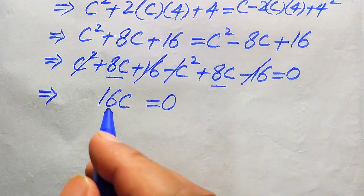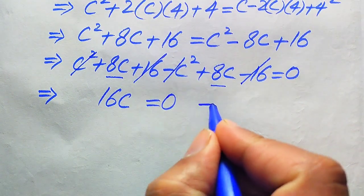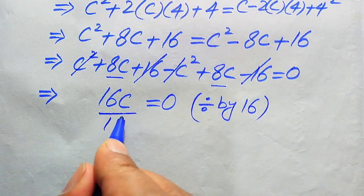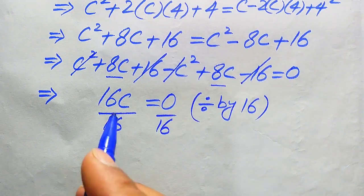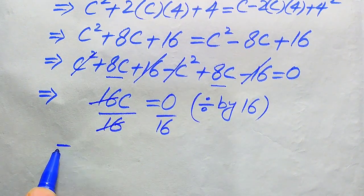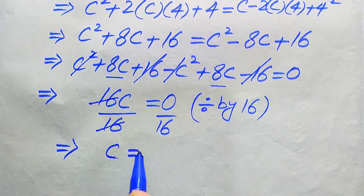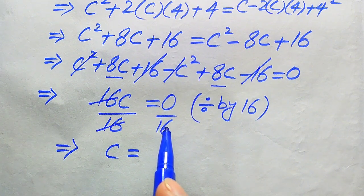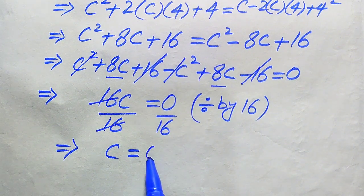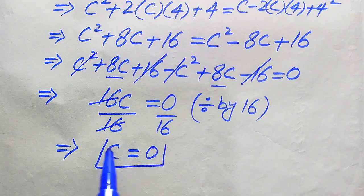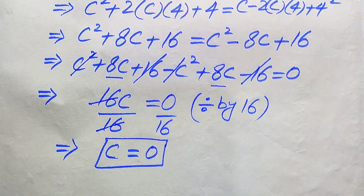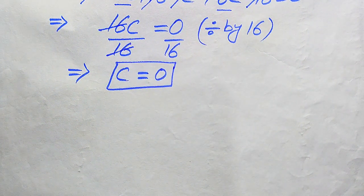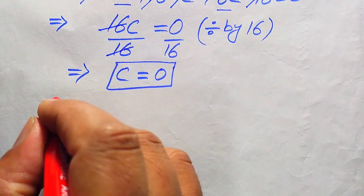From 16c = 0, we divide both sides by 16. The 16s cancel and we get c = 0 ÷ 16. Since zero divided by any number is zero, we get c = 0. So in the first method, we obtain only one value: c = 0.